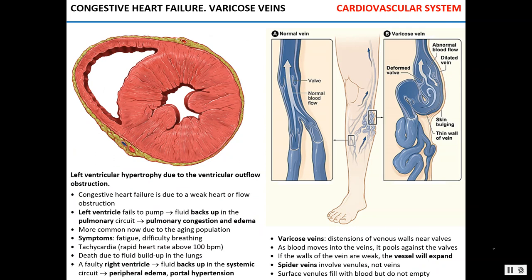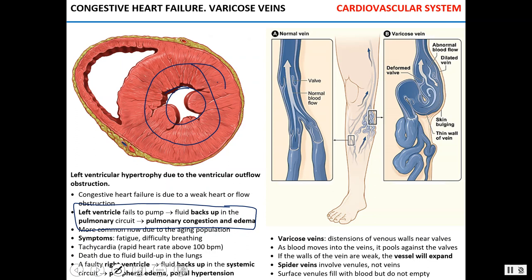Congestive heart failure: here you can see hypertrophy of the left ventricle due to obstruction of the outflow. The left ventricle must pump blood against enormous pressure, leading to thickening of the left ventricular muscle and reduction of the left ventricle size, which leads to failure of the left ventricle to properly pump blood. Since the volumes in the systemic and pulmonary circuits are equal, when the left ventricle fails to deliver proper blood to the systemic circuit, blood gets congested and accumulates in the pulmonary circuit, leading to pulmonary congestion, pulmonary edema, accumulation of fluid in the lungs, difficulty breathing, fatigue, increased heart rate (tachycardia), and eventually death due to lung dysfunction.